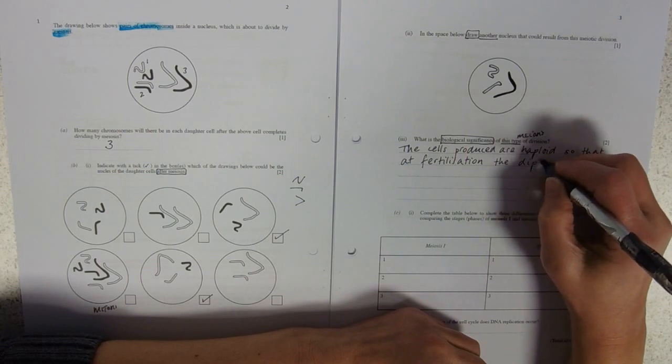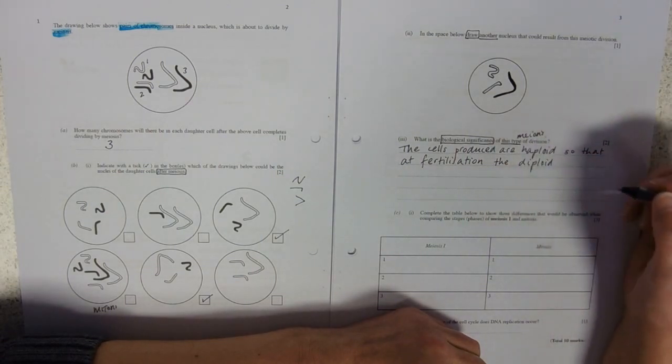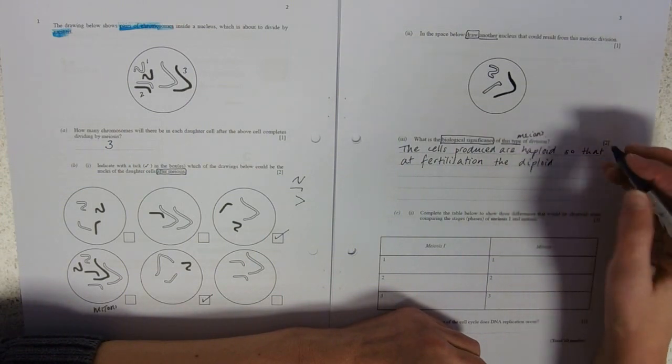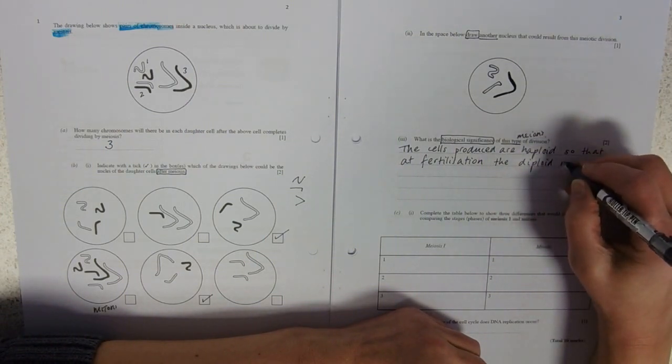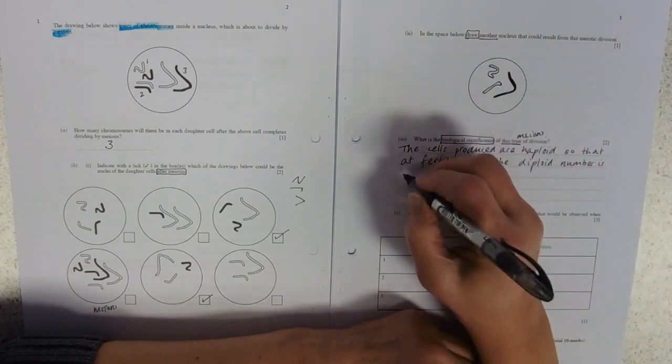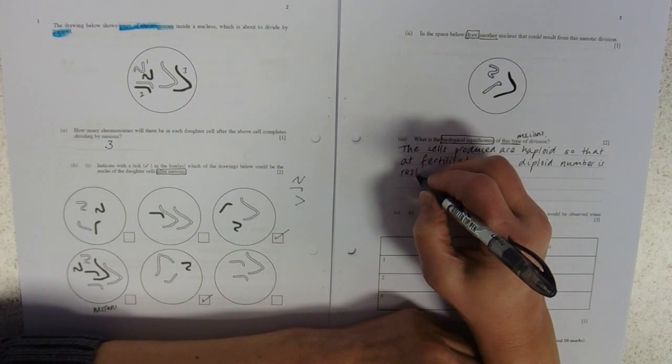...the diploid number is restored. Great words, aren't they? You just need to know what they mean. You need to know that haploid is, you know, not in pairs. Diploid is...